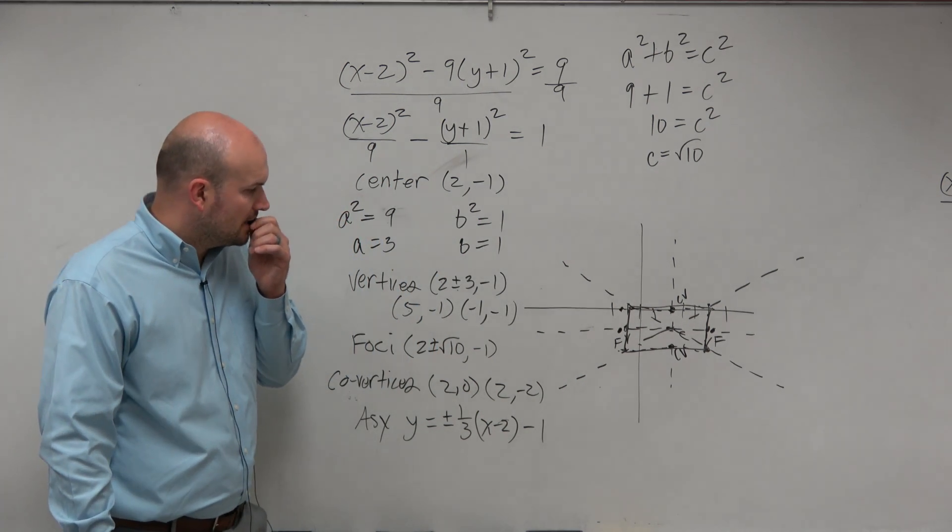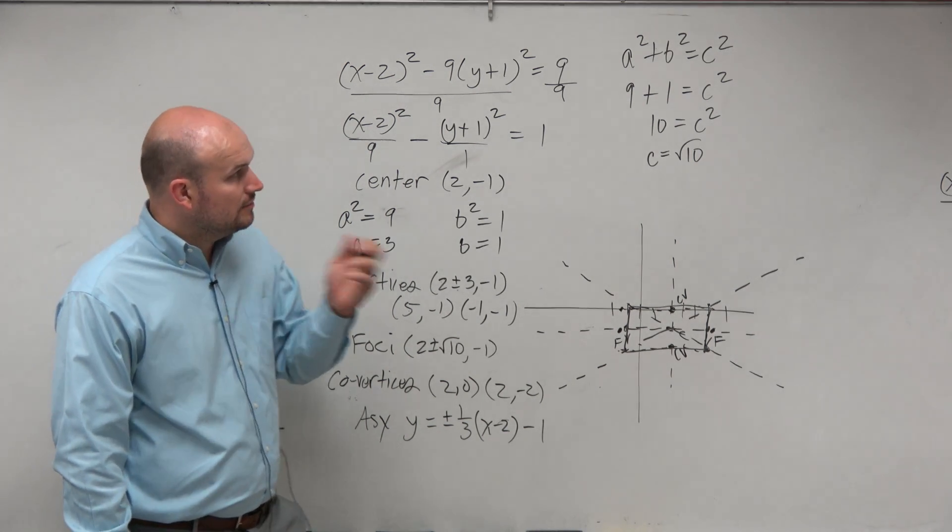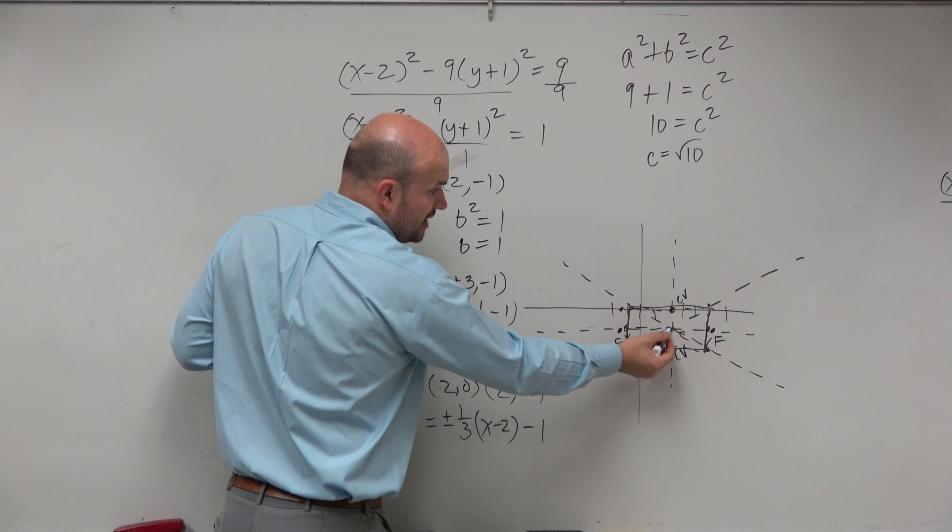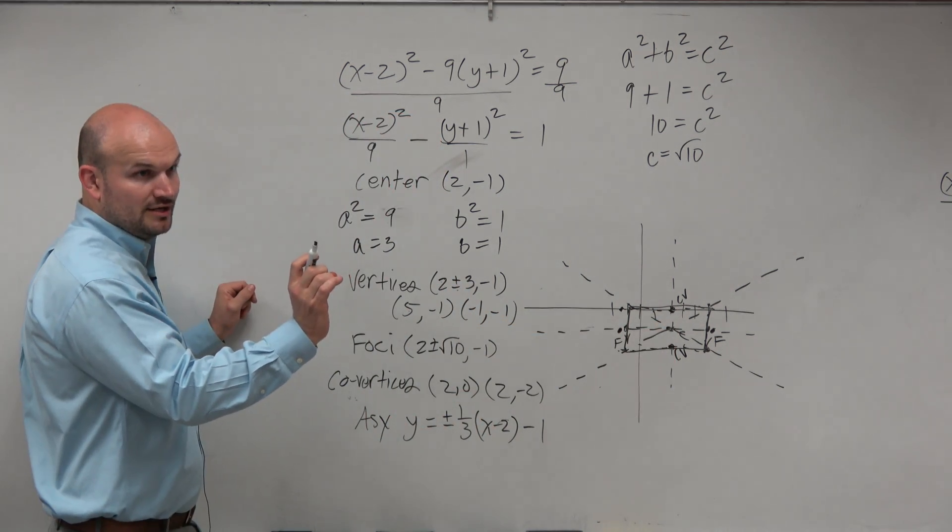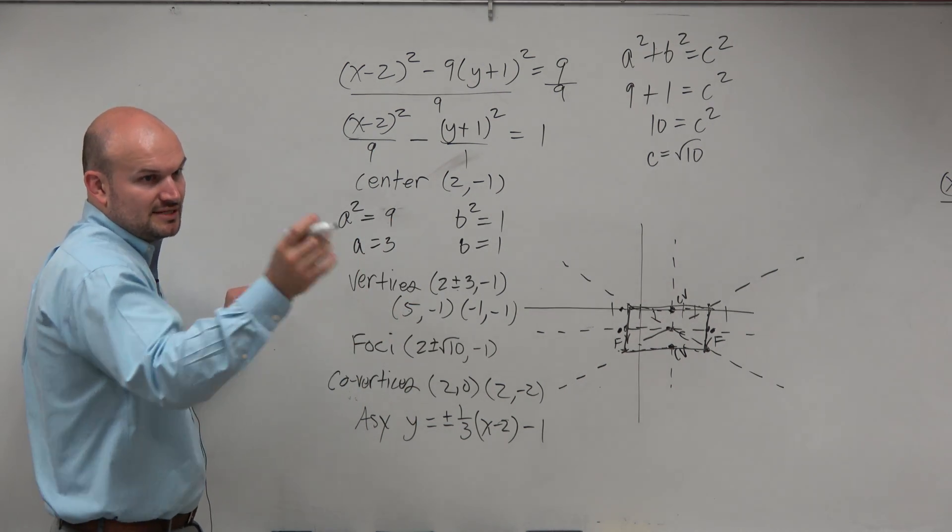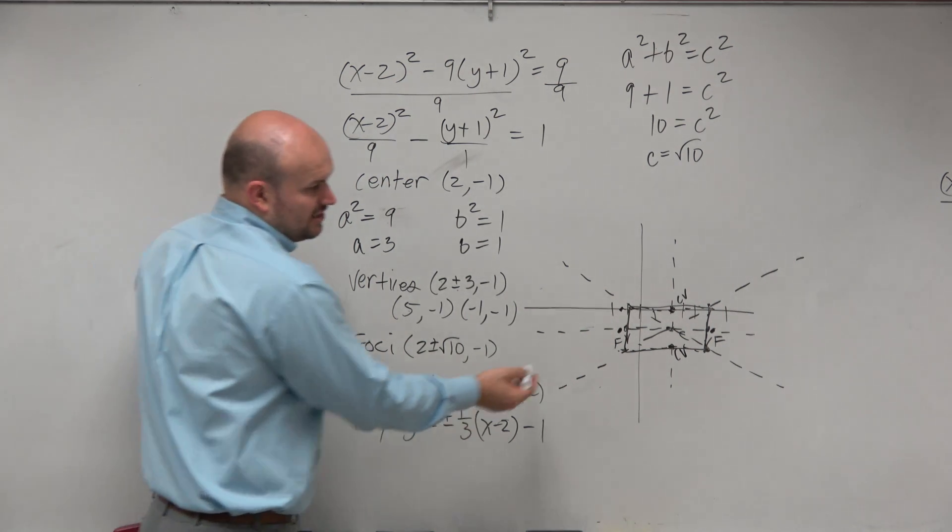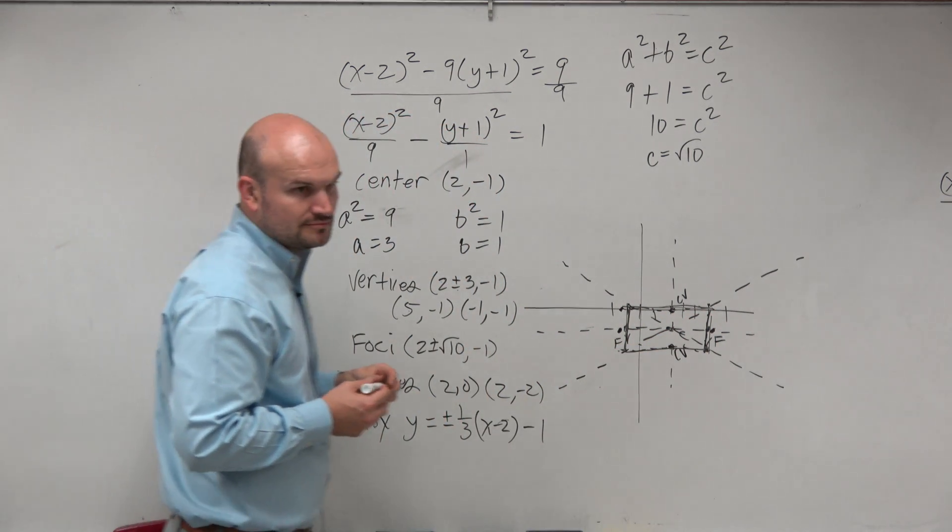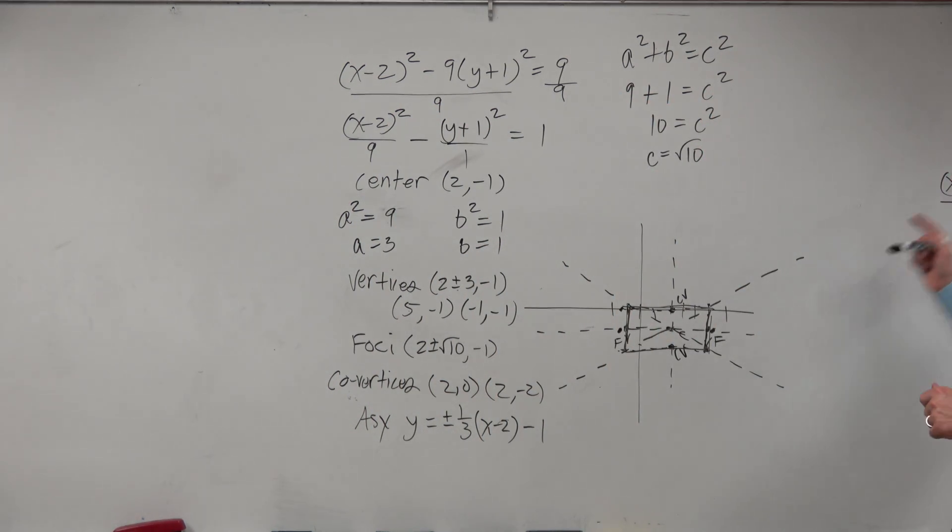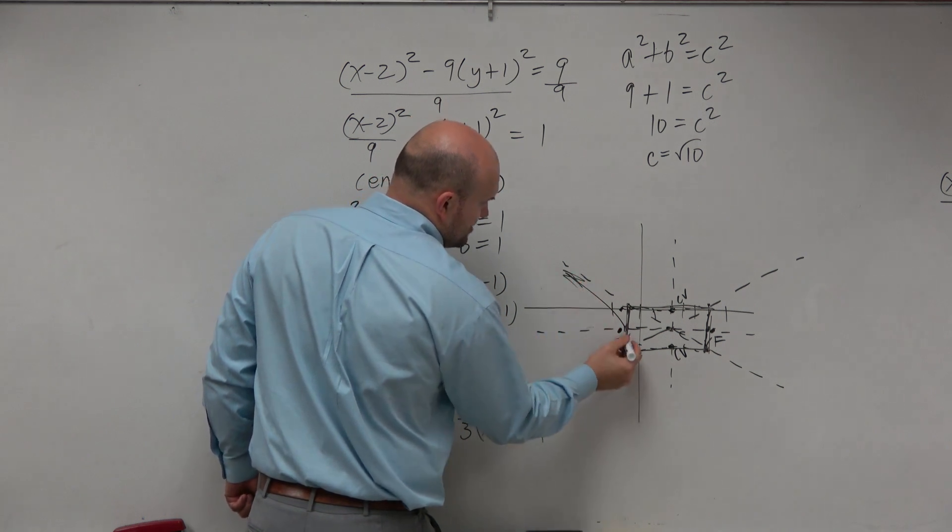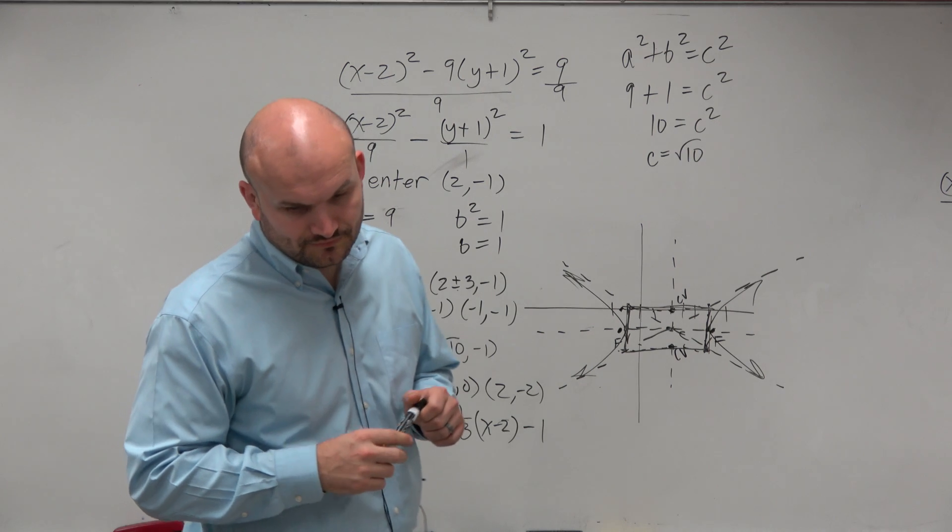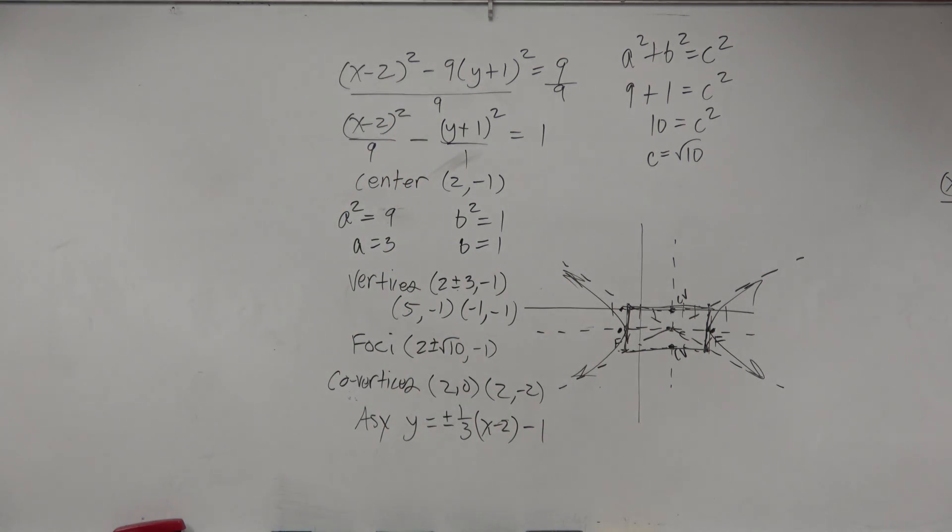So for the co-vertices, how did you get that? Well, notice, the co-vertices go up and down from the center when you have a horizontal transverse axis. So you're at 2, the center's at 2, and you're going up 1, and you're going down 1. So you're at (2, -1). If you're at (2, -1) and you go up 1, you're at (2, 0). And if you're at (2, -1), you go down, you're at (2, -2). I just did vertical lines and horizontal lines. So I'm just kind of estimating where those points are. And then I can just draw my parabolas through my vertex, approaching my asymptotes, opening it up towards your focus.